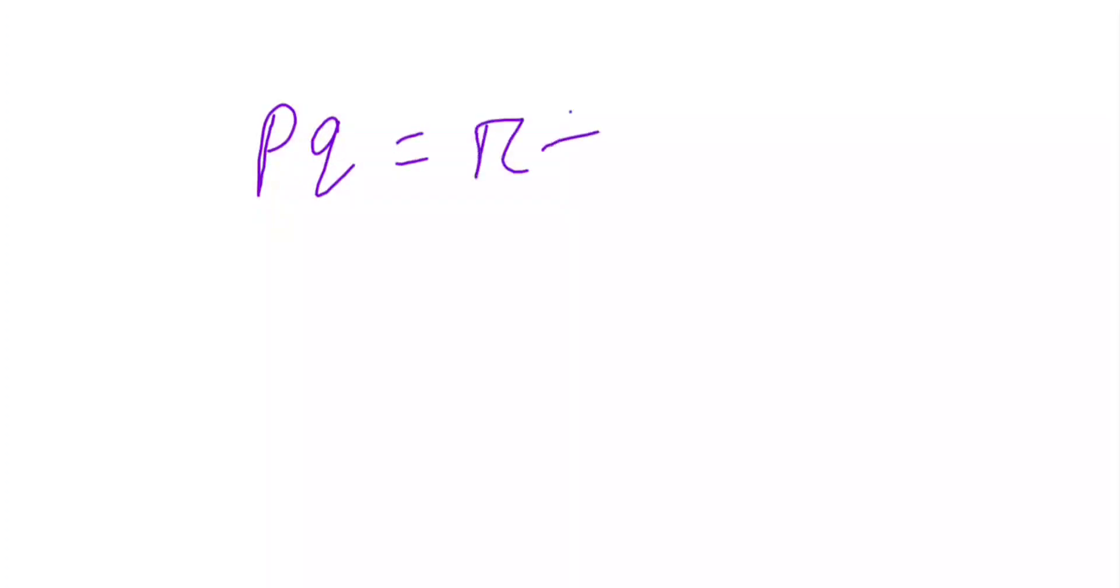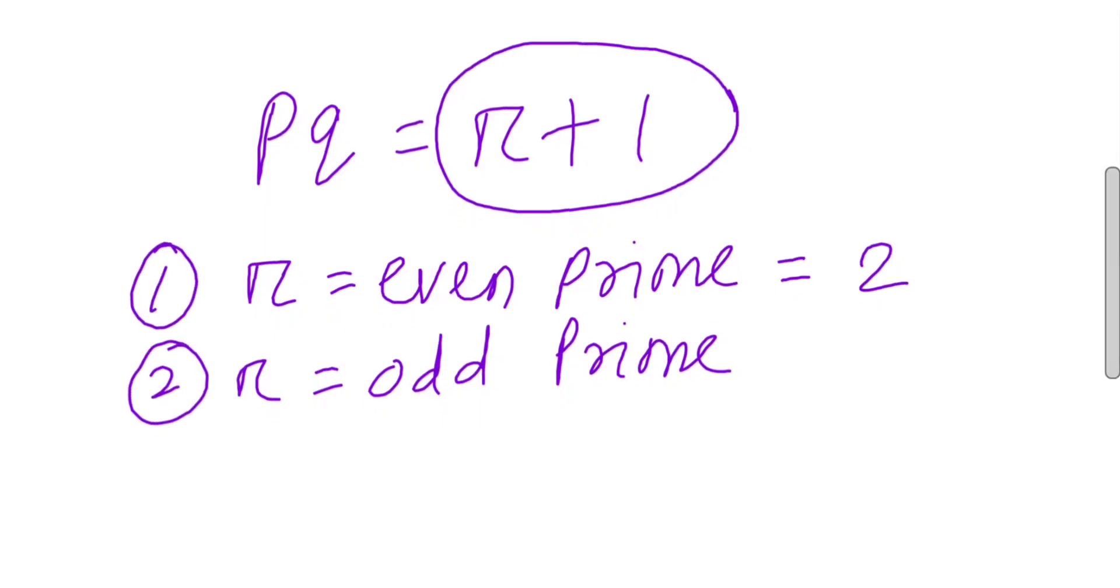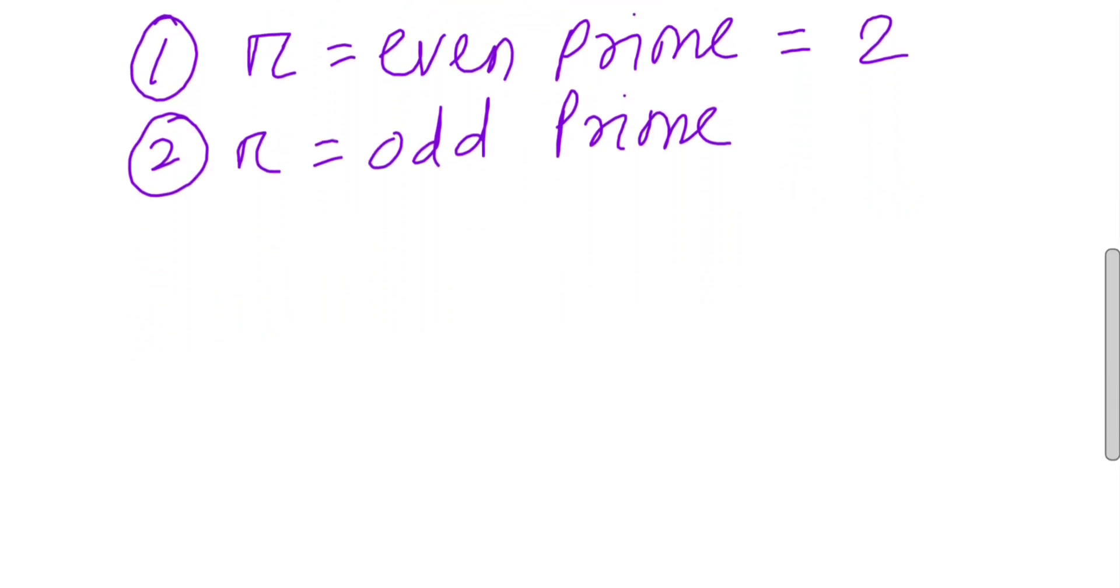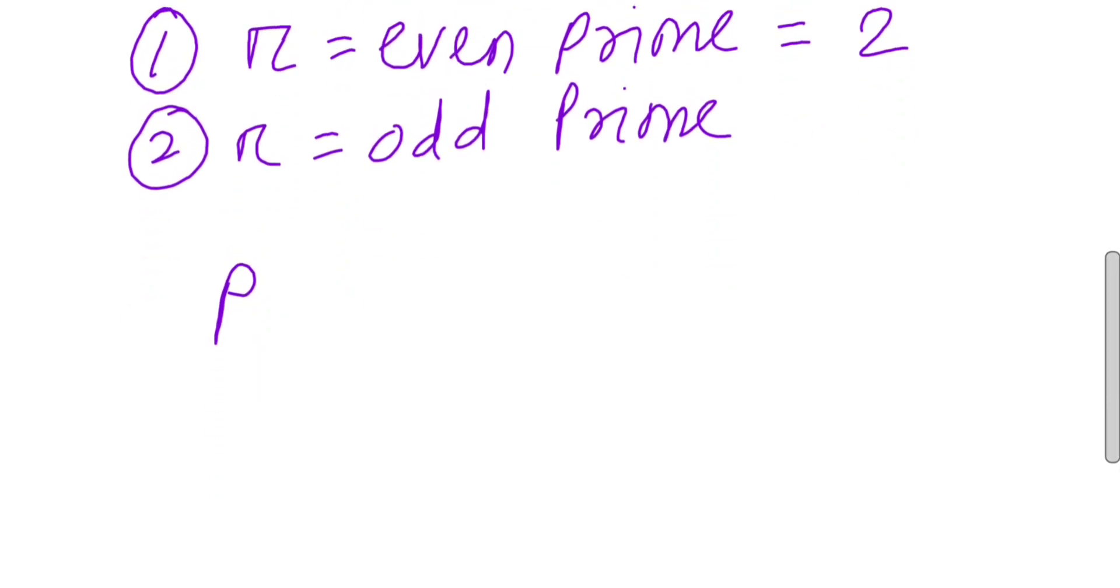We'll take the first question and focus on this side. Because p, q, r are all prime, r can be even prime or r can be odd prime. So if r equals the even prime, then r must be 2. This will be our case 1, this will be our case 2. So if r equals the even prime, then pq must be 2 plus 1, that is pq must be 3.